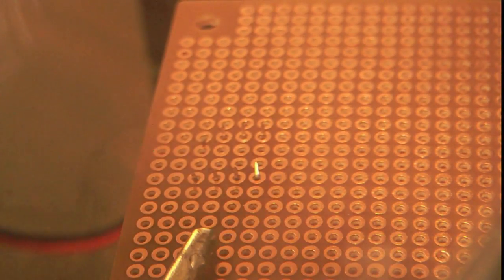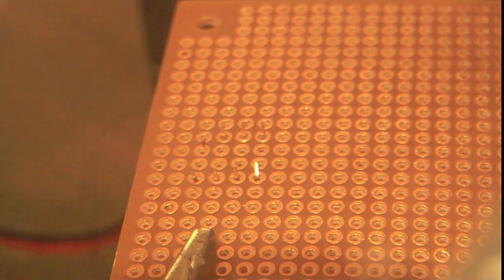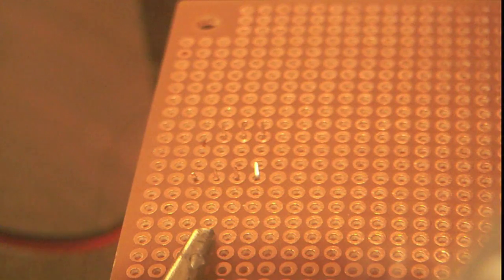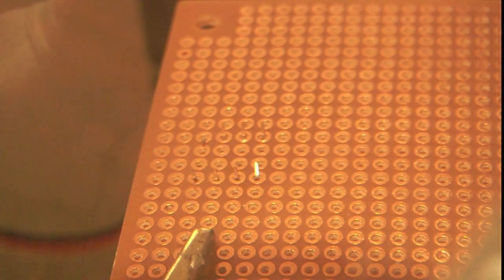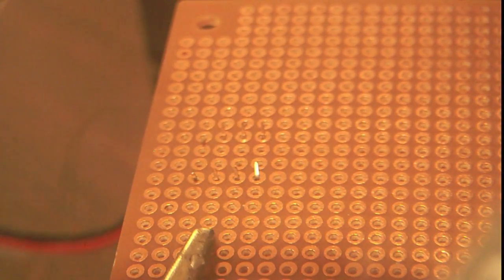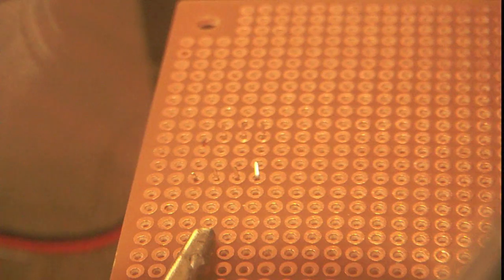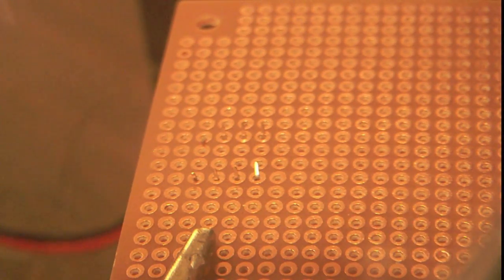So when you're soldering, even if your metal is perfectly clean, you still need flux. It will oxidize when you put your soldering iron on it. And also it removes the surface tension of solder, which lets the solder flow very easily. Because normally, without flux, solder has a higher surface tension. And you want the solder to flow easy.